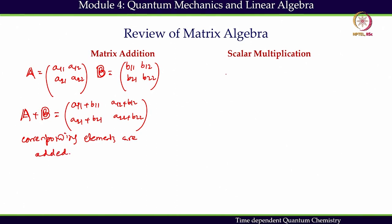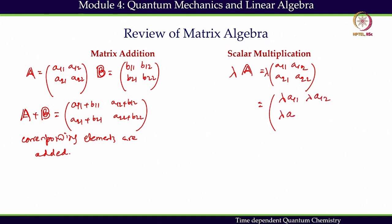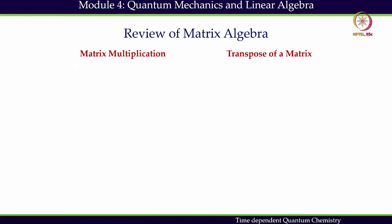Scalar multiplication: if I have a matrix [a_{11}, a_{12}; a_{21}, a_{22}] and multiply by a scalar lambda, then each element is multiplied — giving [λa_{11}, λa_{12}; λa_{21}, λa_{22}]. Matrix addition and scalar multiplication are two distinct concepts we must distinguish.